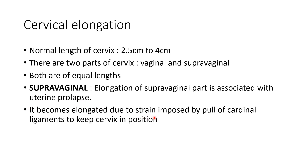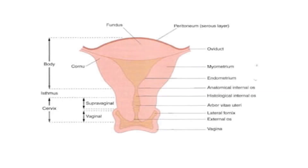The supra-vaginal part of the cervix becomes elongated due to strain enforced by the cardinal ligaments trying to keep the cervix in position. When the uterus undergoes prolapse, its supporting ligaments are also stressed. Because the uterus is weak and its support is weak, the cervix becomes supra-vaginally elongated. The supra-vaginal part is connected with the uterus, and the vaginal part hangs below.